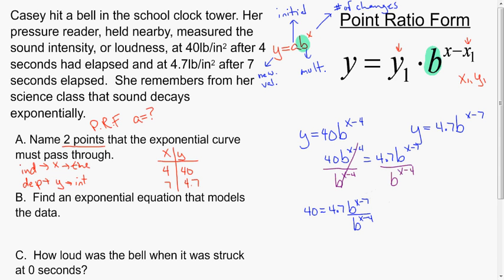Taking it a step further to get my b's isolated, I will divide by 4.7. This is all in an attempt to find the exponential equation. If I find an exponential equation in this form or this form, I've got to find b. We get 40 over 4.7 equals b to the x minus 7 over b to the x minus 4.